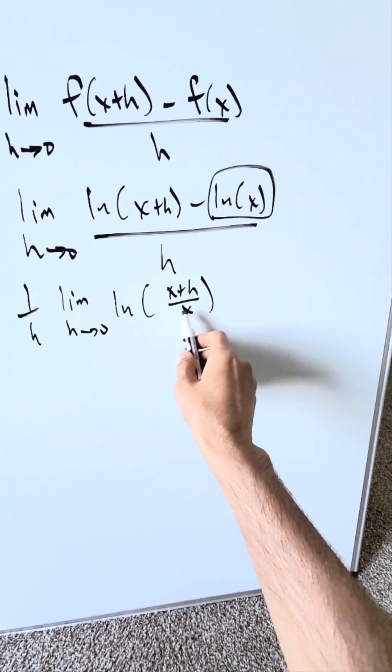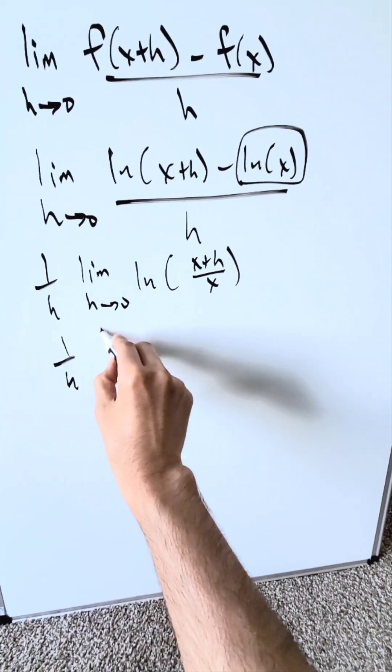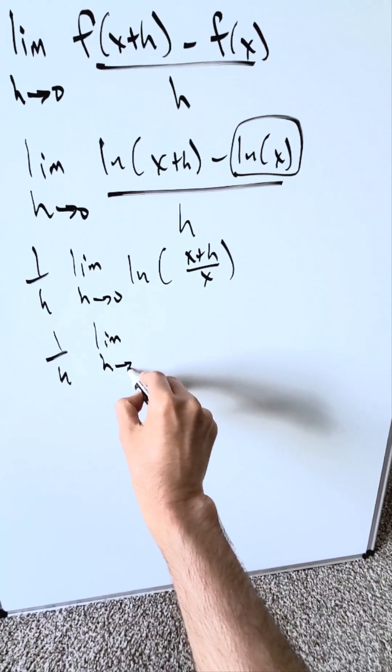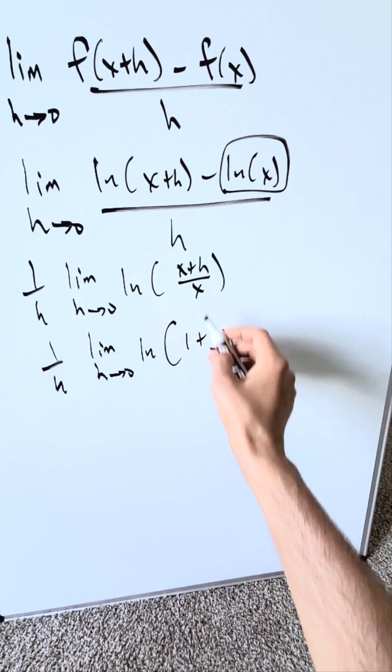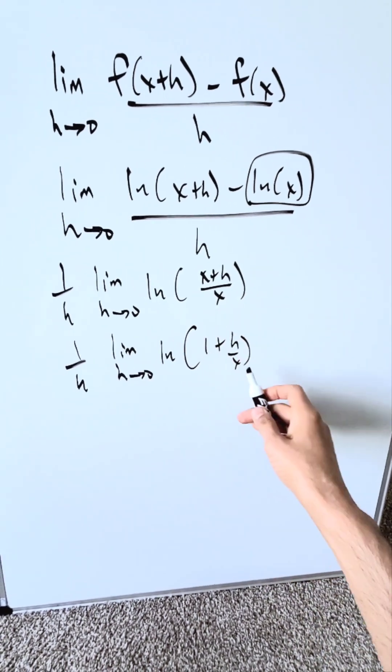Look here, algebraically we'll manipulate this. We're looking at 1 over h, limit as h approaches 0, I would have natural log of 1 plus h over x. This right here is equal to that, algebraically you can manipulate it.